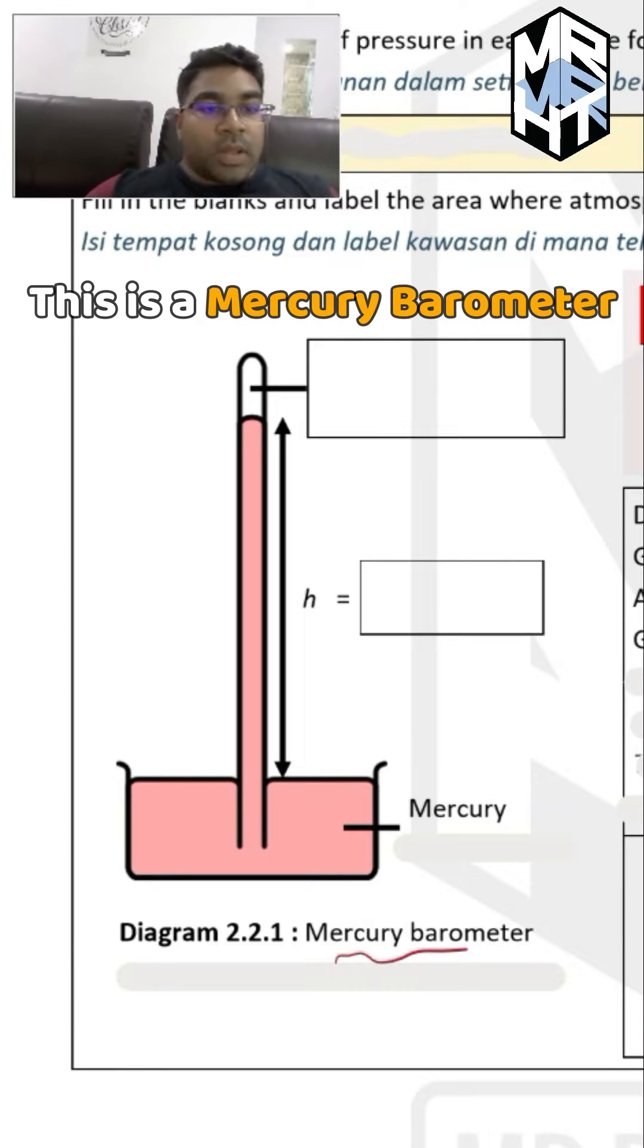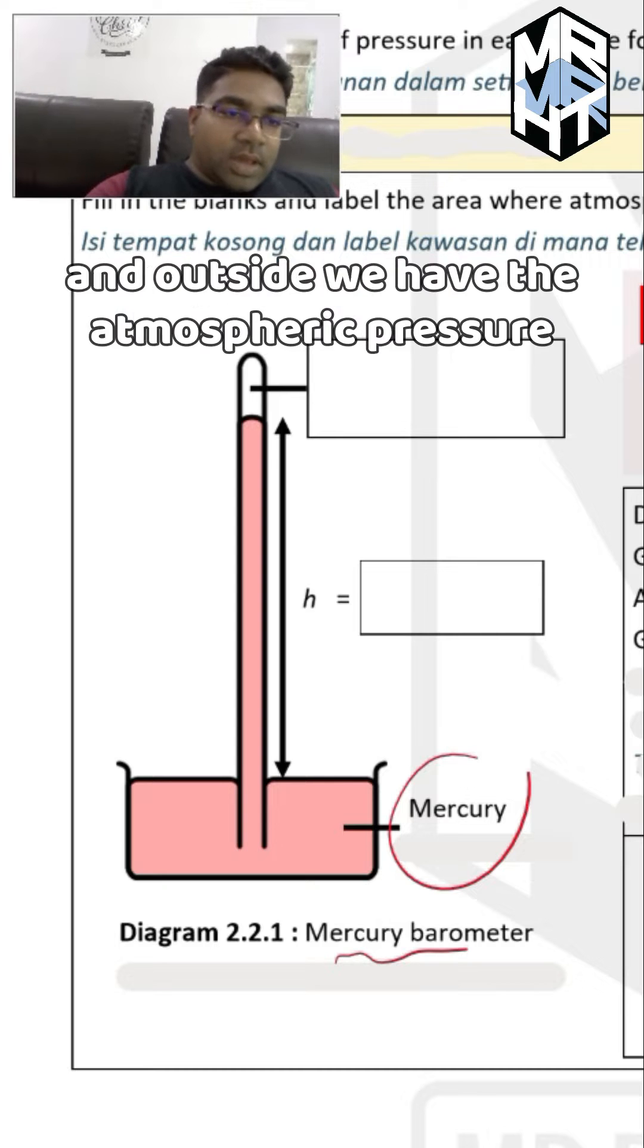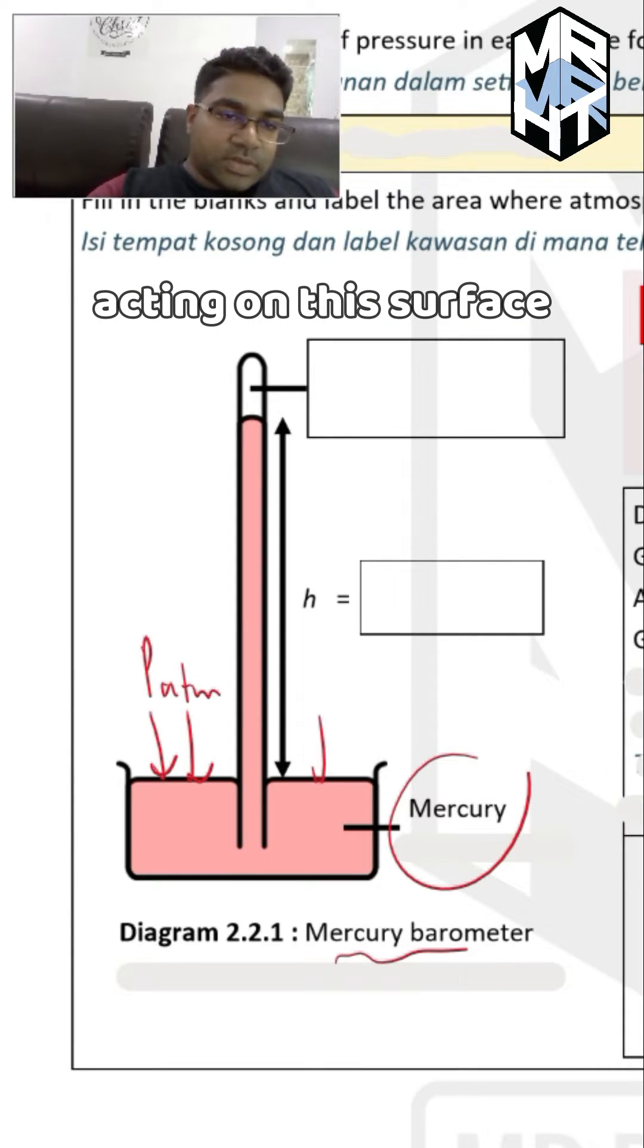This is a mercury barometer. How this works is inside here this liquid is mercury and outside we have the atmospheric pressure acting on this surface.